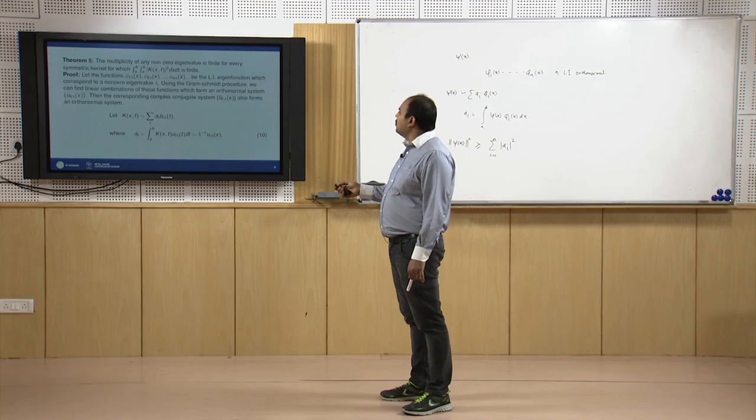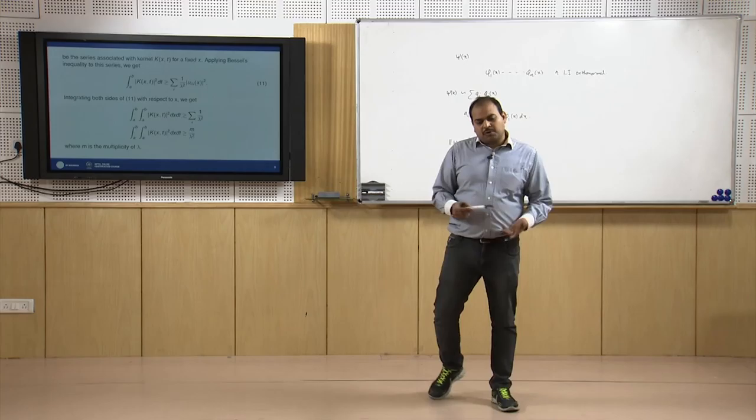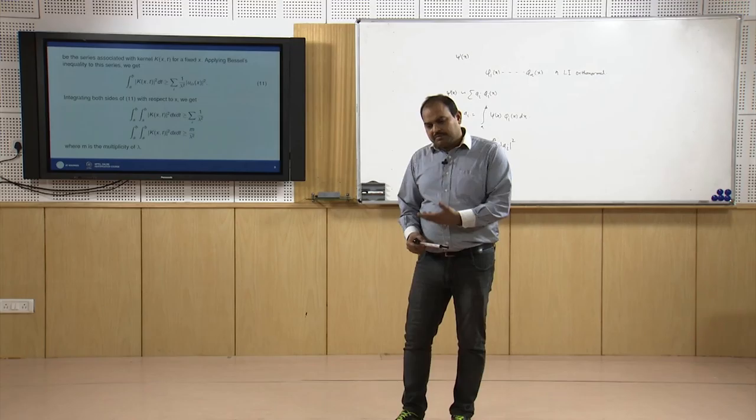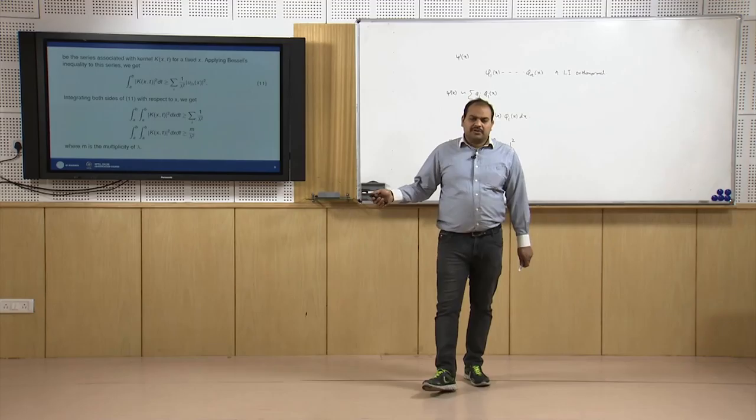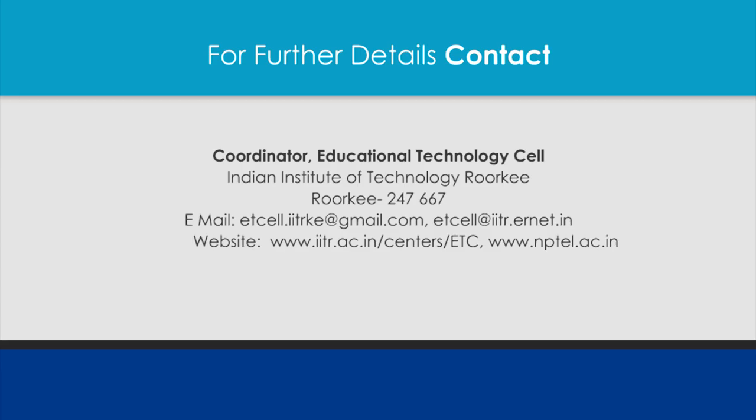This proves that the multiplicity of any non-zero eigenvalue is finite for every symmetric kernel for which ∫∫|k|² dx dt is finite — i.e., for every L² kernel. In the next lecture, we will discuss more properties of eigenvalues and eigenfunctions and then develop a solution method for Fredholm integral equations with symmetric kernels. Thank you for listening.